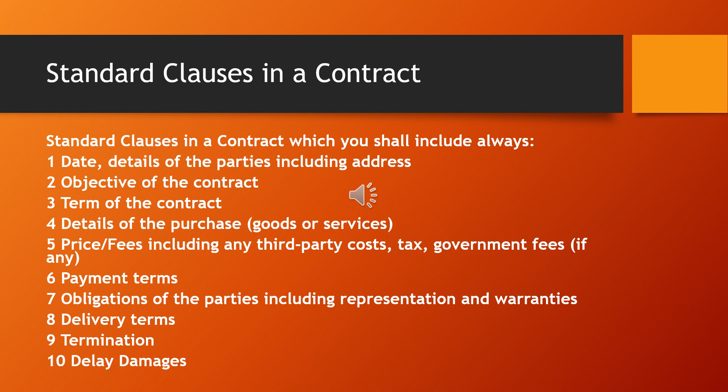We shall discuss now about the standard clauses that you will include in all the contracts. Starting with one, the date of the contract; and the details of the parties — if it is an individual, it's about the legal identity, or if it is a corporate company, it's about the license or registration details, including the address. Second, the objective of the contract — for what purpose you are drafting the contract.